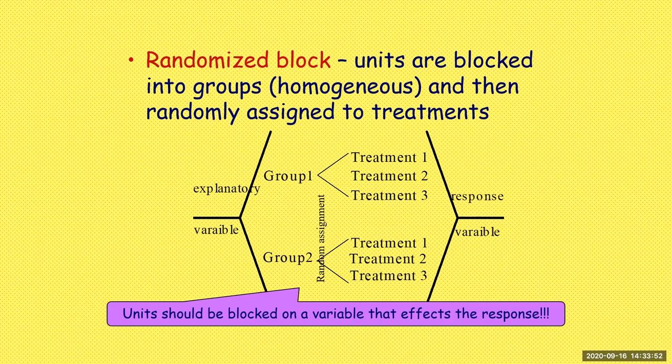You should only block units based on what variable affects the response. If you think there's going to be a difference between genders, then group them separately — males and females. Maybe you think there's going to be a different response based on age levels, then block against age levels, and so forth.